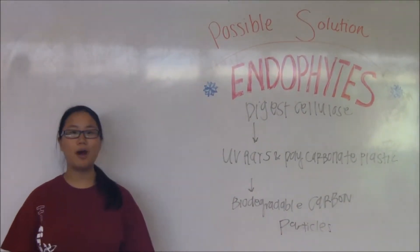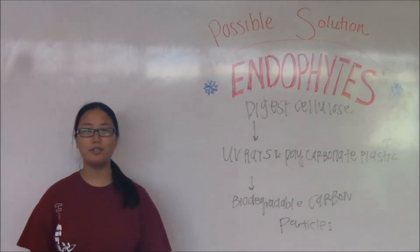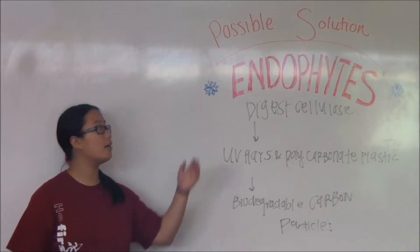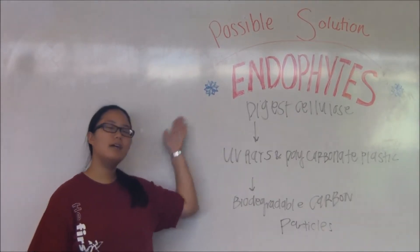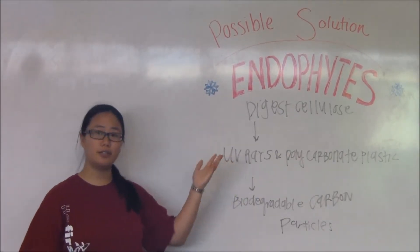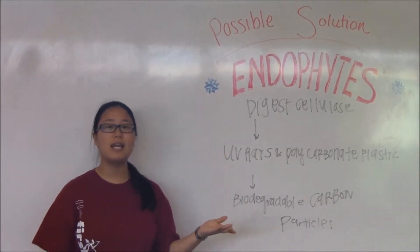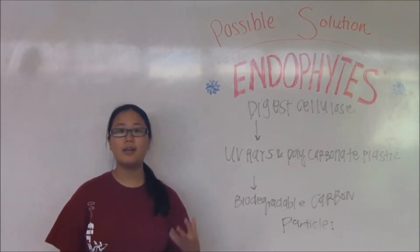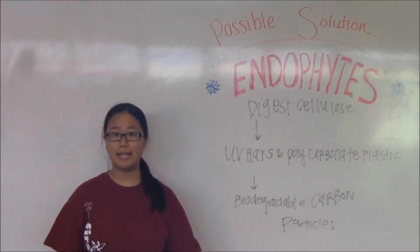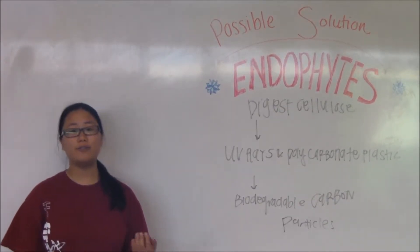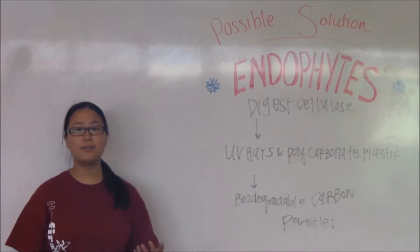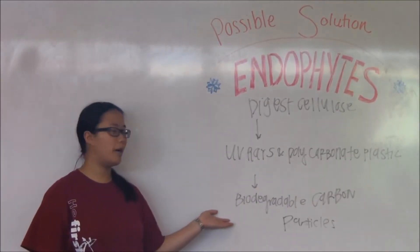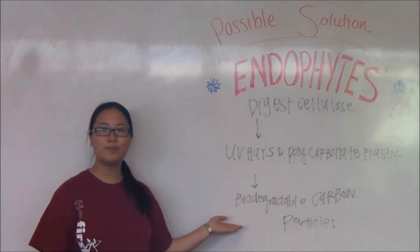A unique way to address the problem of plastic pollution lies in the Amazon rainforest with a fungus called an endophyte. Originally designed to digest cellulose in plants, it has been converted by researchers to digest polycarbonate plastic. Along with the aid of UV lights, it is able to convert the polycarbonate plastic into biodegradable carbon particles.